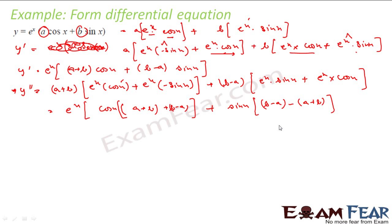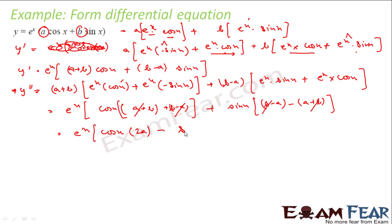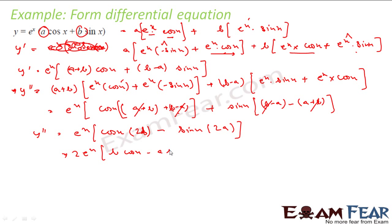After merging, for cos x we have (a + b) + (b − a) = 2b, and for sin x we have (b − a) − (a + b) = −2a. So y double dash = e^x(2b·cos x − 2a·sin x), which equals 2·e^x(b·cos x − a·sin x). Dividing by 2: y double dash / 2 = e^x(b·cos x − a·sin x).